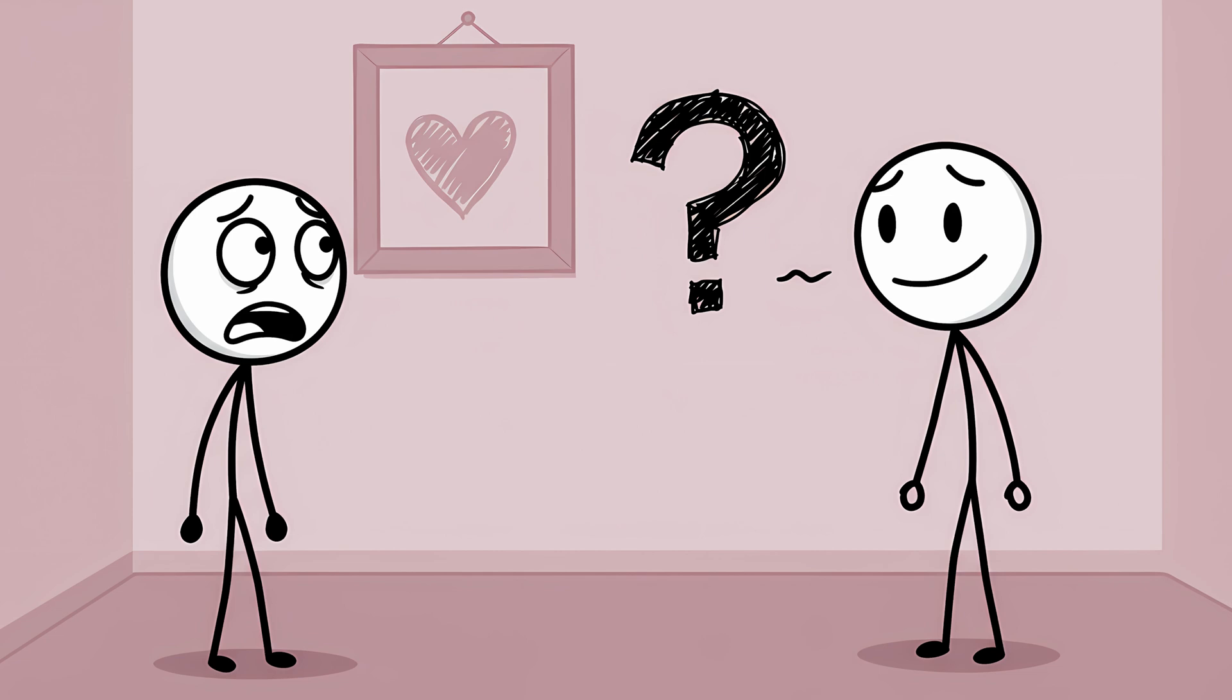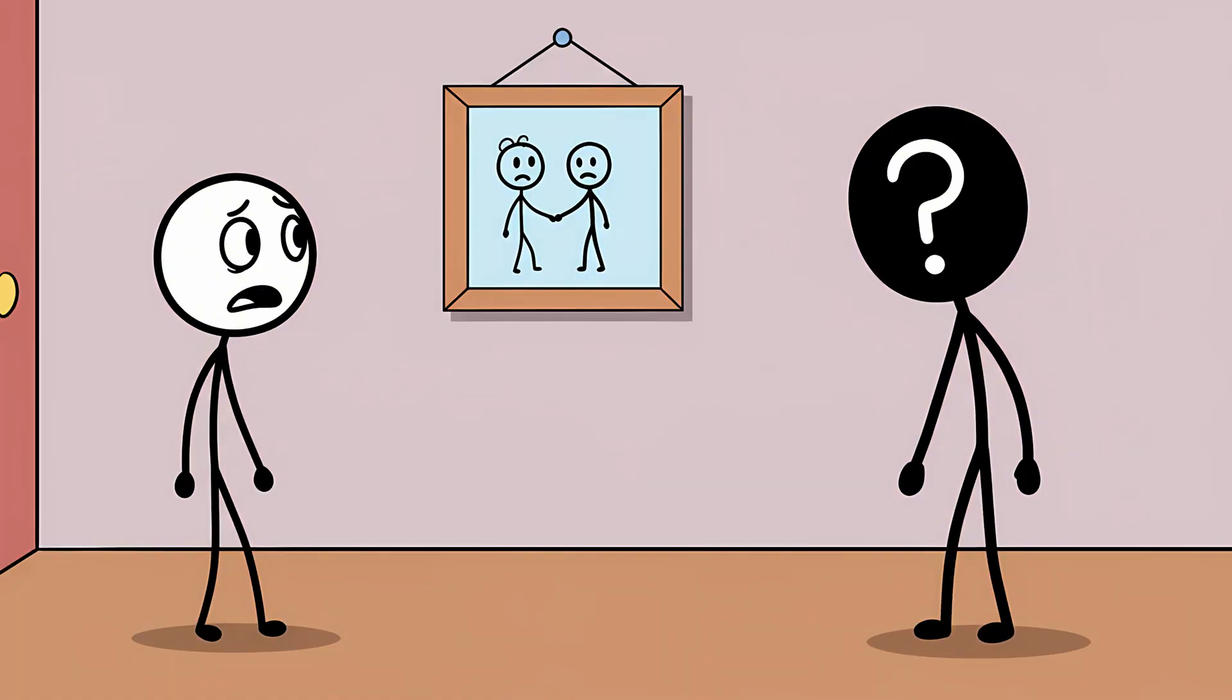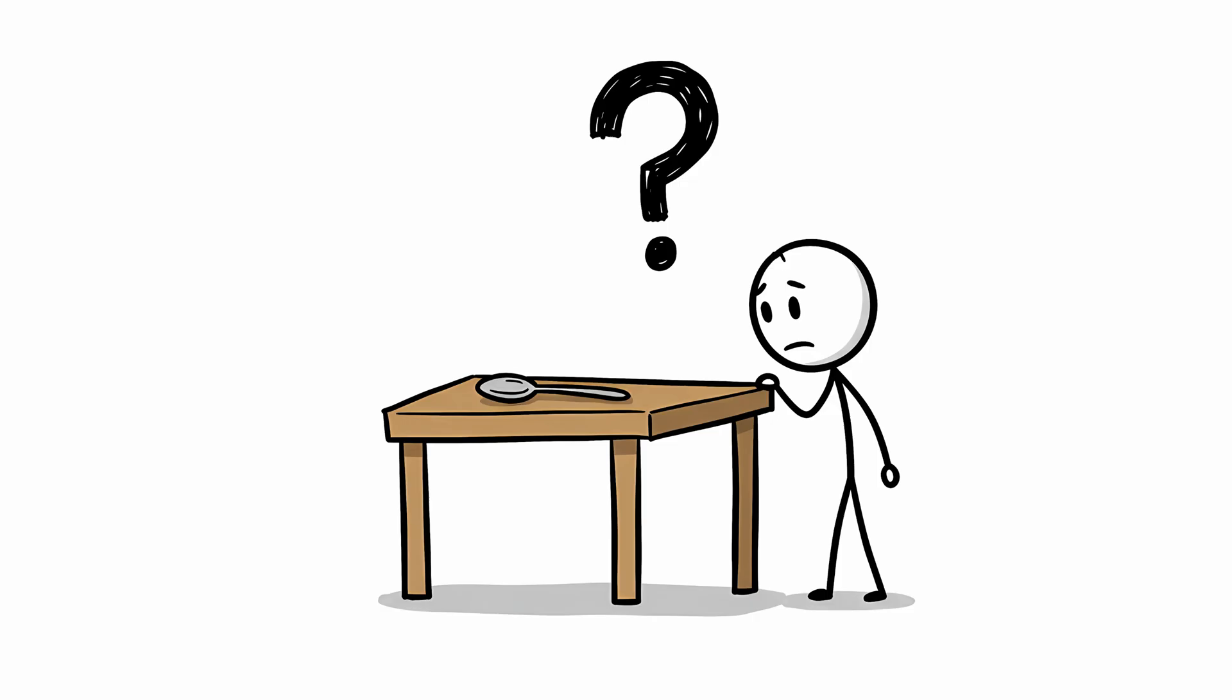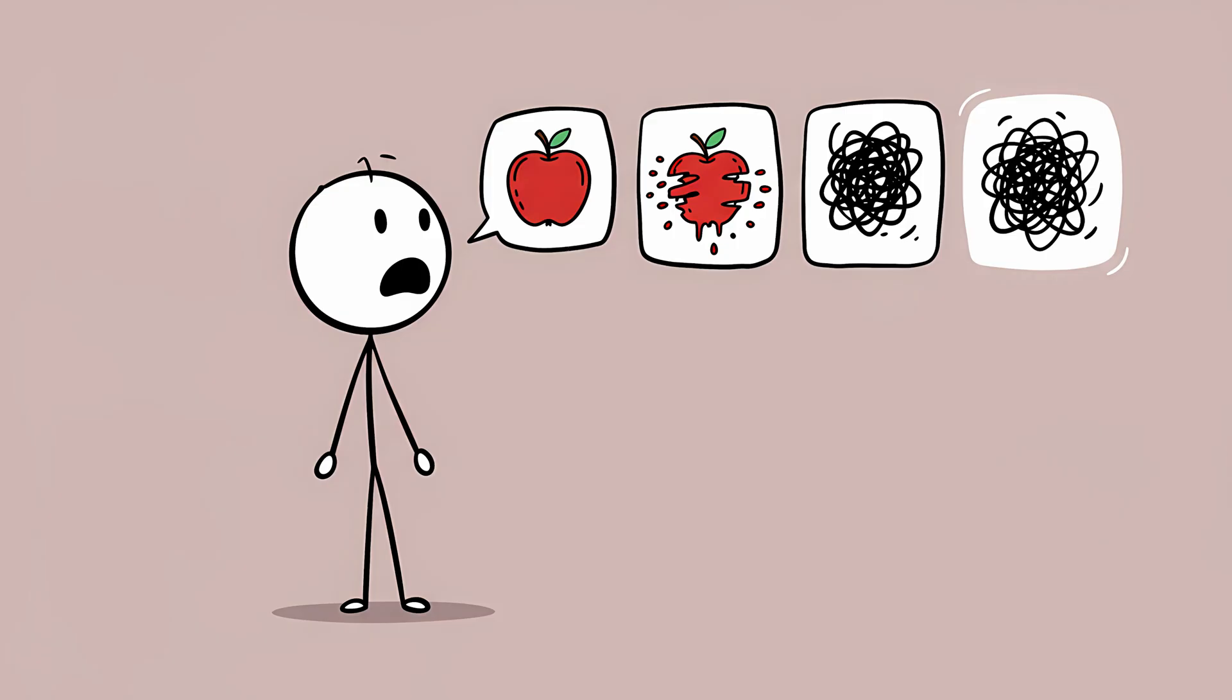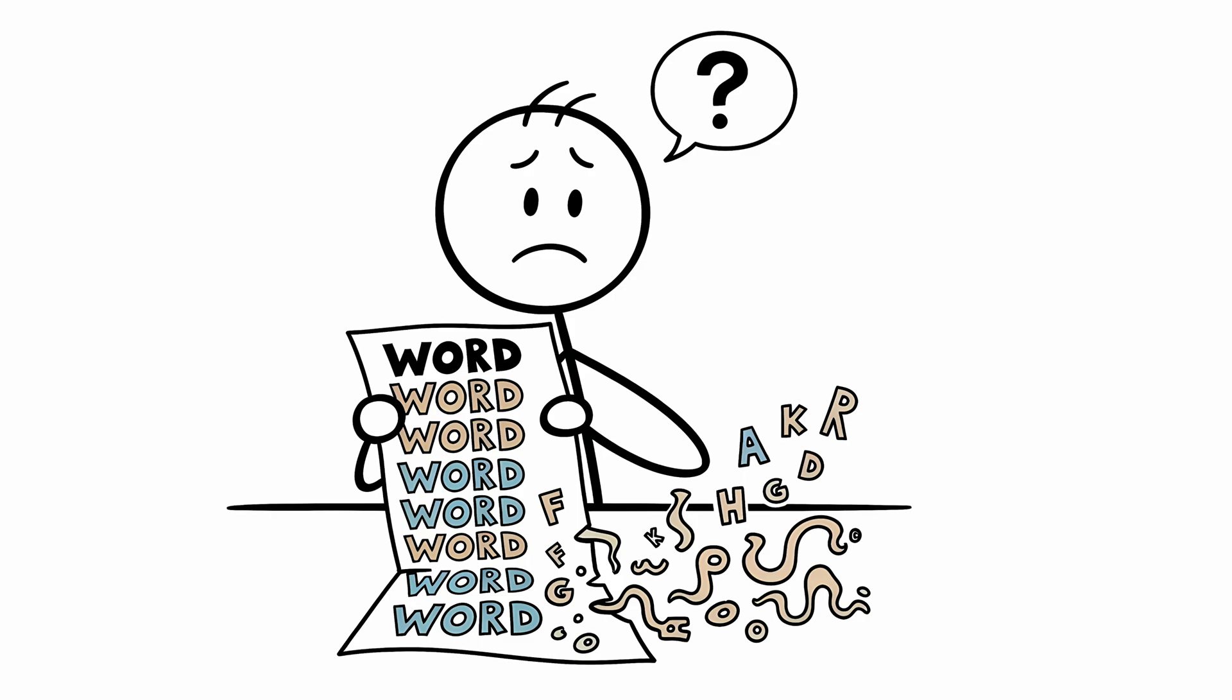You know objectively that this is your spouse of 20 years, but for a terrifying moment, your brain refuses to provide the corresponding feeling of familiarity. It's like looking at a stranger. This happens to most people in small, harmless ways. Ever repeat a word over and over again until it loses all meaning and just sounds like a bizarre collection of noises? That's a mini episode of Jamais-vous.